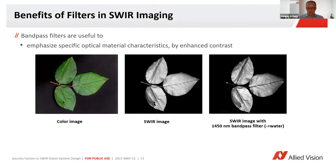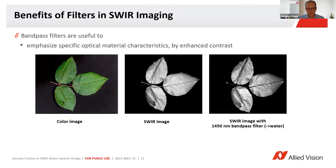If you pick a certain bandpass filter focusing on the material that you're interested in — in this example, water — you can greatly enhance the contrast. You can see on the right-hand side veins in the leaf where the moisture still sits. That's neither very visible in the color image nor in the broadband sphere image, but with a bandpass filter you have a really nice contrast and can see the black veins on the leaf.